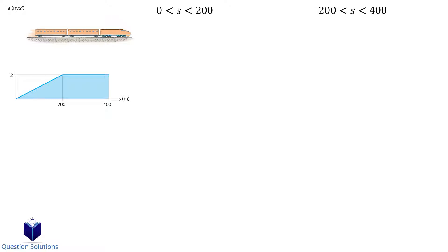The first section can be represented using the equation a equals 2 over 200s, which is simply 1 over 100s. The second segment is a equals 2.